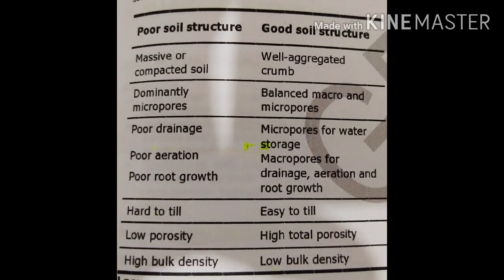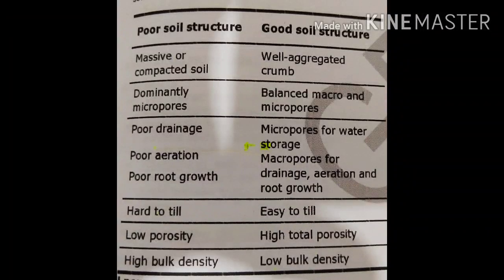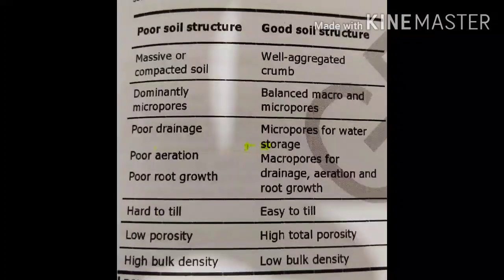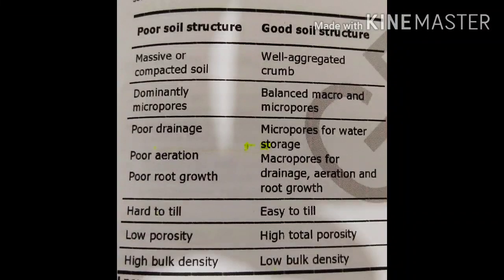What is bulk density? Bulk density is the weight of the soil in a given volume. The higher the bulk density, the more compacted the soil.